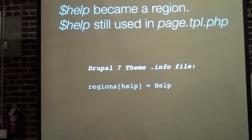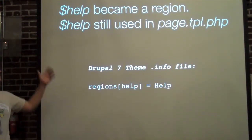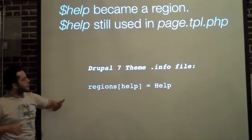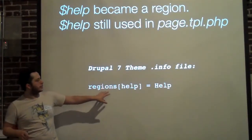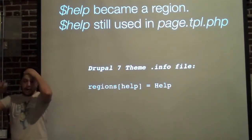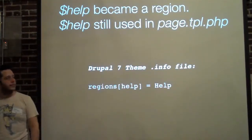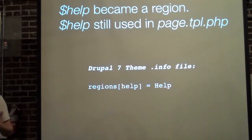The help variable has now become an official region. Now the help variable still uses page.tpl, but there's an official region. So if you're setting up themes from scratch, you should declare this help region, and when help text appears for the page, this is the region it will appear in. Before, there was just a help variable generally available to page.tpl; now that it's an official region, we can do much fancier things with it.